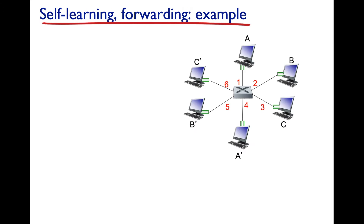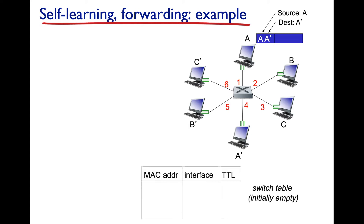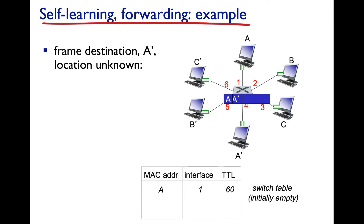Let's take a look at this forwarding example. We have hosts A prime, A, B, B prime, C, and C prime on a six-port switch. Host A sends to MAC address A prime — source MAC address is A, destination MAC address is A prime. It comes into the switch. The switch sees that source MAC address along link one was MAC address A, so it writes: to reach A, use interface one, with a TTL of 60. It looks up destination MAC address A prime, finds none, and performs flooding.